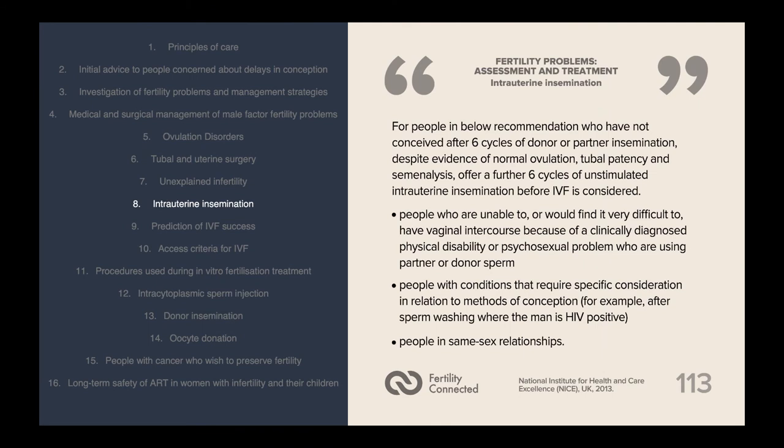For people in these groups who have not conceived after six cycles of donor or partner insemination, despite evidence of normal ovulation, tubal patency and semen analysis, a further six cycles of unstimulated intrauterine insemination should be offered before IVF is considered.